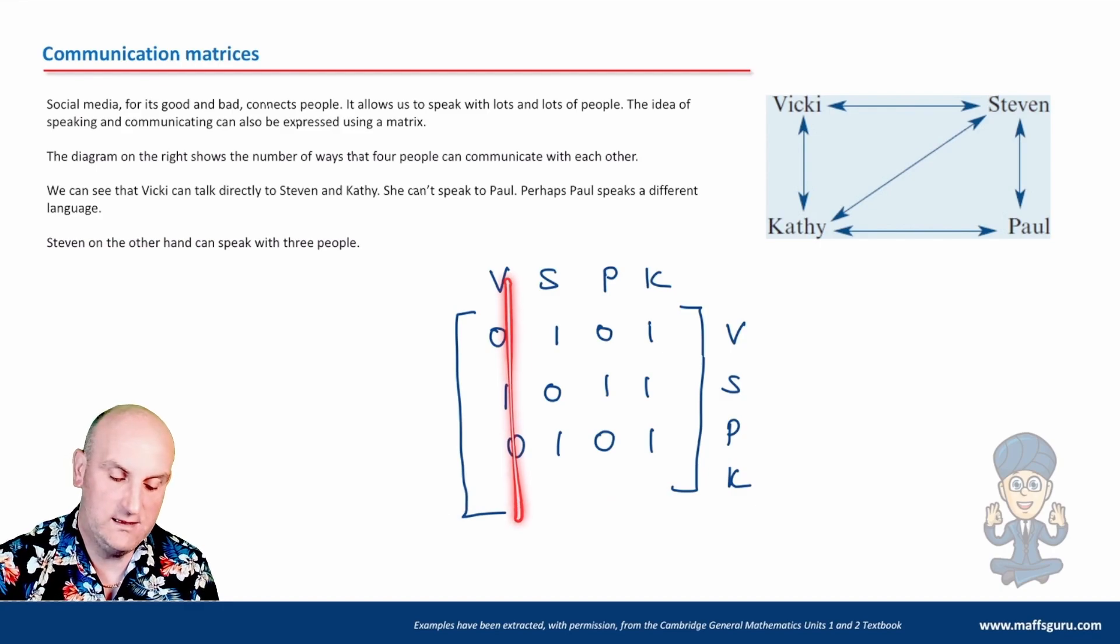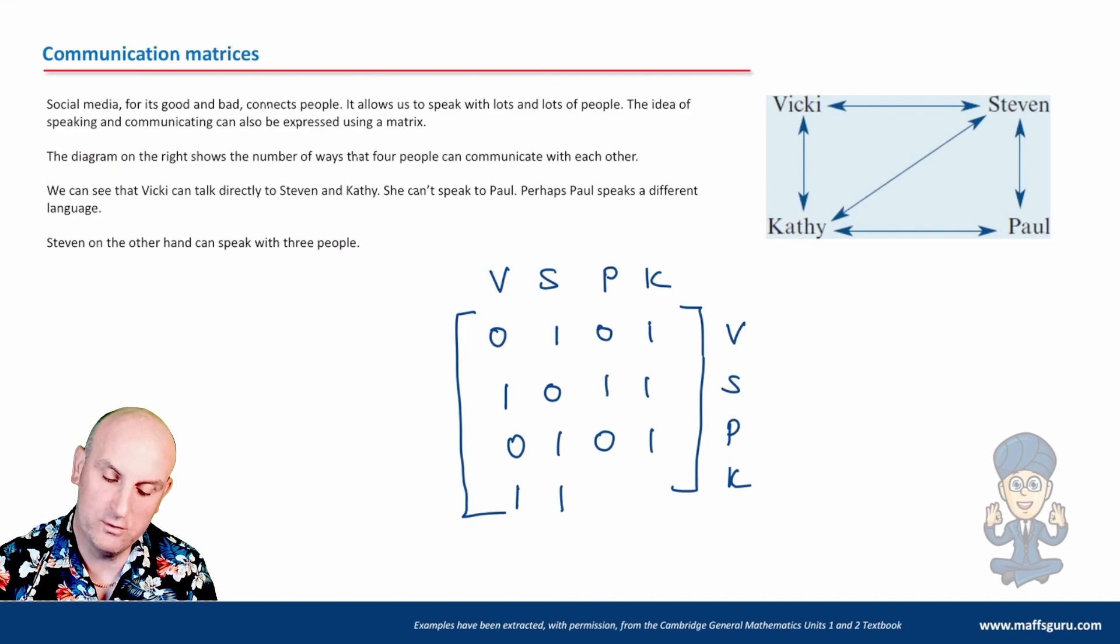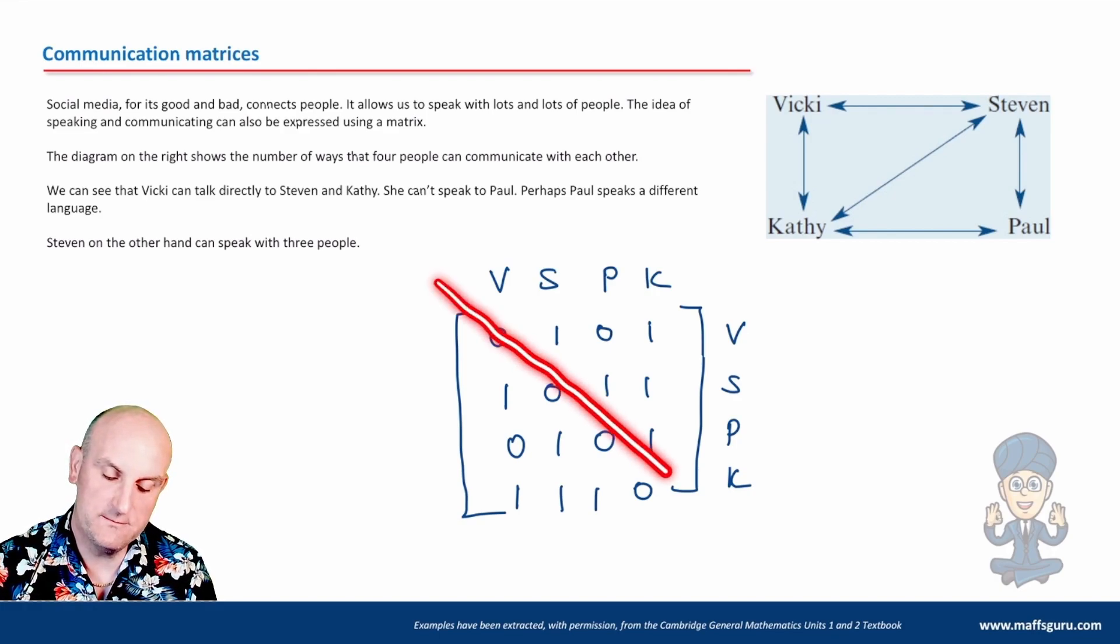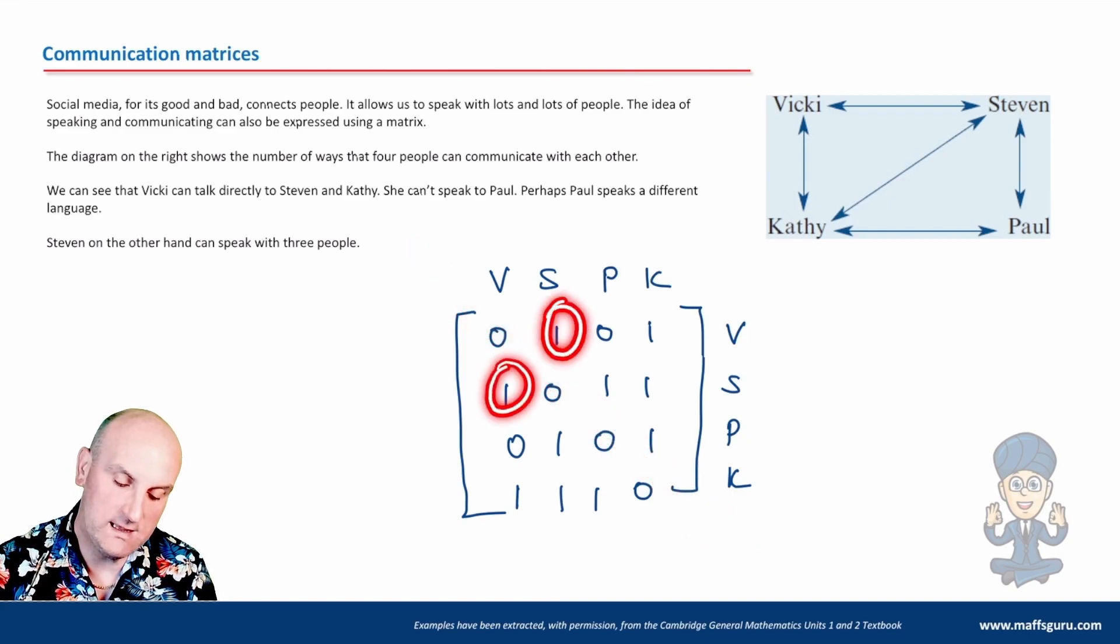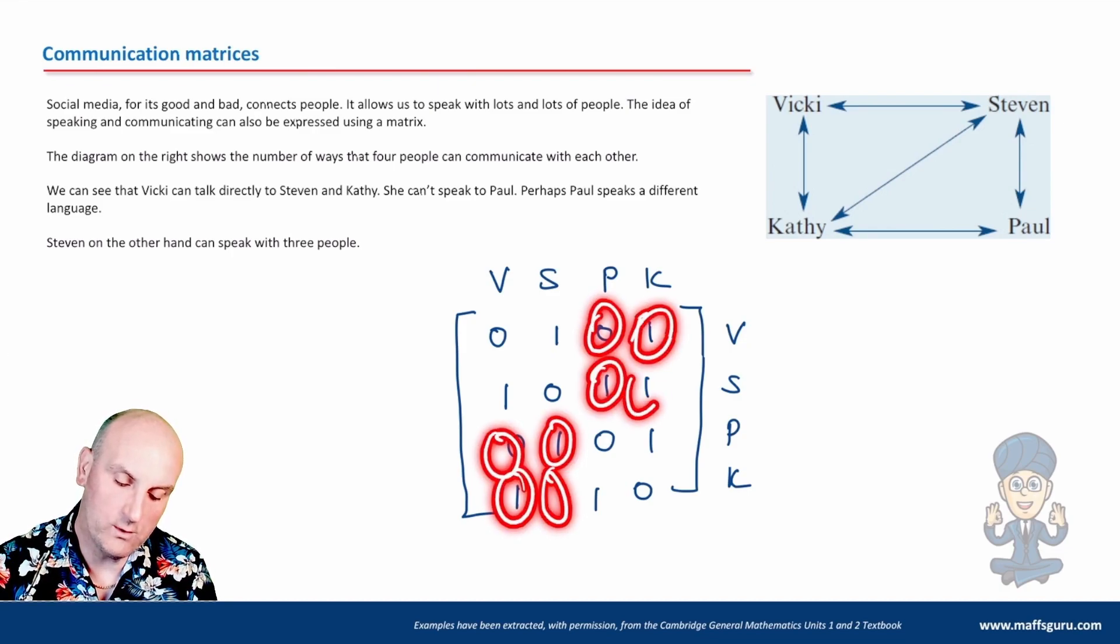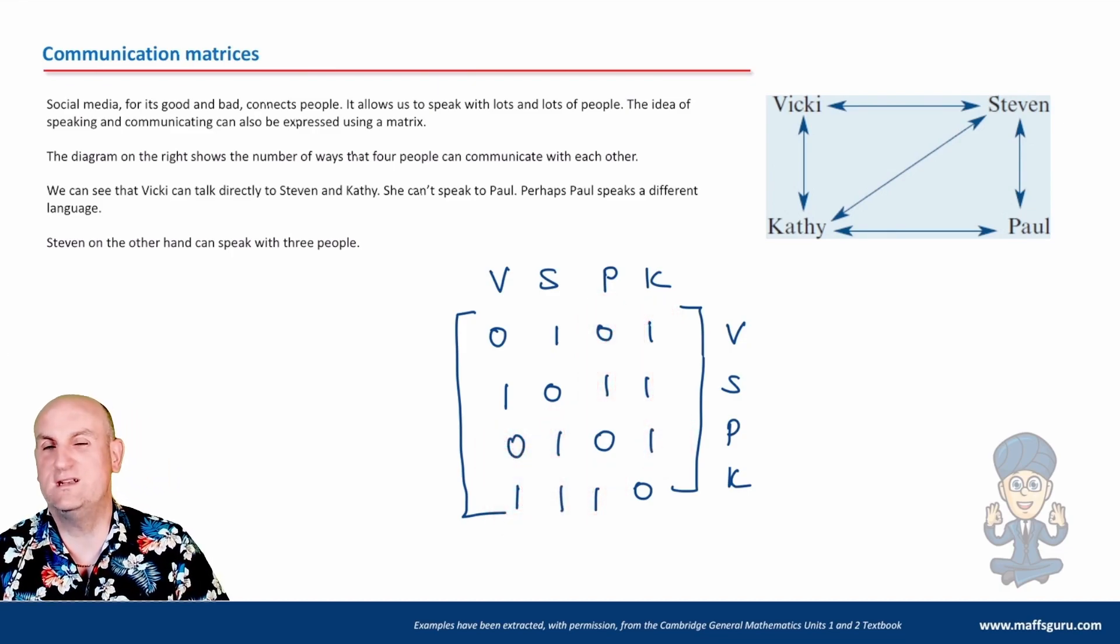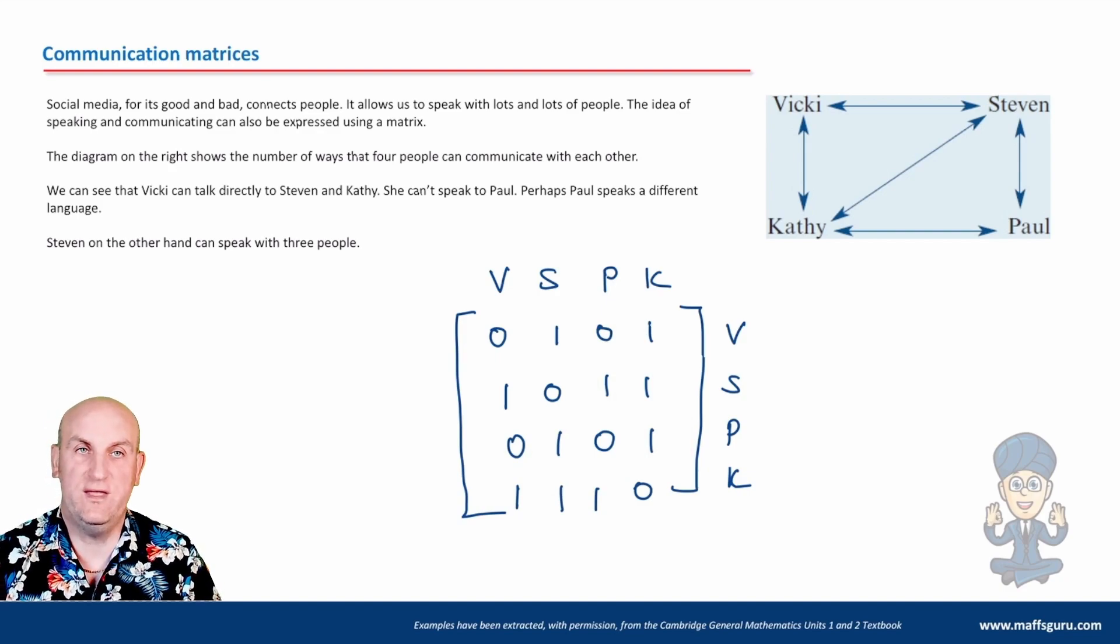And then we've got the last one here. That's to Kathy. Can Vicky talk to Kathy? Yes. Can Stephen talk to Kathy? Yes. Can Paul talk to Kathy? Yes. And can Kathy talk to Kathy? No. Now again, what I'm going to do is just check that it is symmetrical. So I've obviously got this line through here. So one, one. Yep. Zero, zero. Yep. One, one, one, one. Yes. One, one. Yep. One, one. So chances are I haven't made a mistake here, but there we go.